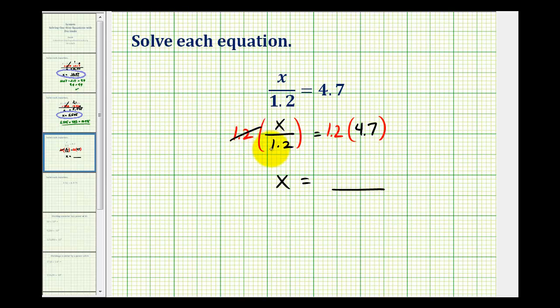So here we'll have 1.2 divided by 1.2. This is going to simplify to one. So we have x on the left side, which is what we wanted. And now the right side will have 1.2 times 4.7. Let's go ahead and perform that multiplication. Notice we have one decimal place here and one decimal place here, which means our product must contain two decimal places.